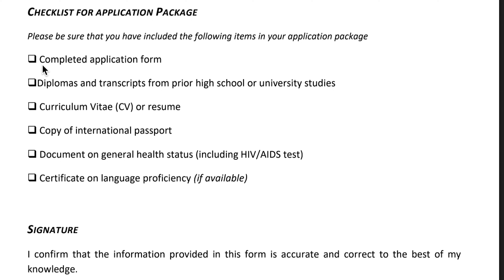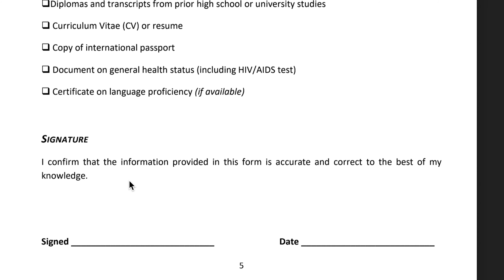Next is the checklist for the application package. If you have completed the application form, check it off along with: diploma and transcript from prior high school or university studies, your CV, copy of international passport, document on general health status, and certificate of language proficiency. When all documents are ready, check all these boxes. Then sign and write the date confirming the information provided is accurate and correct.